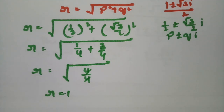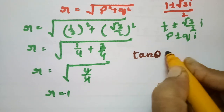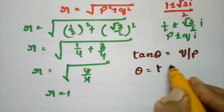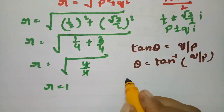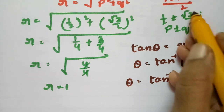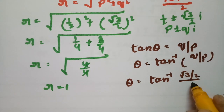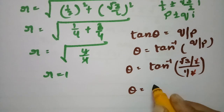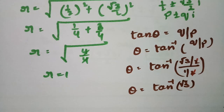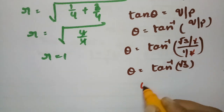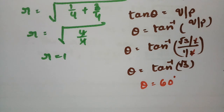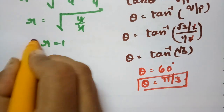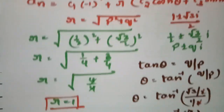So r = √(4/4) = 1. For θ, we have tan θ = q/p, so θ = tan⁻¹(q/p) = tan⁻¹(√3/2 ÷ 1/2) = tan⁻¹(√3). We get tan⁻¹(√3) = 60° = π/3. Therefore r = 1 and θ = π/3.